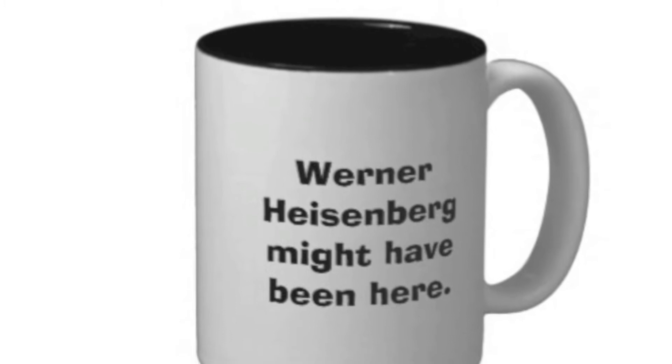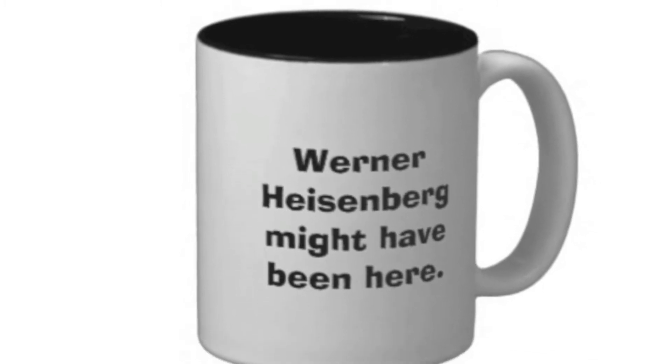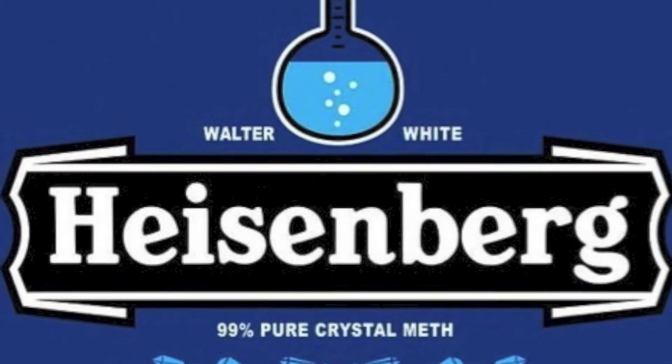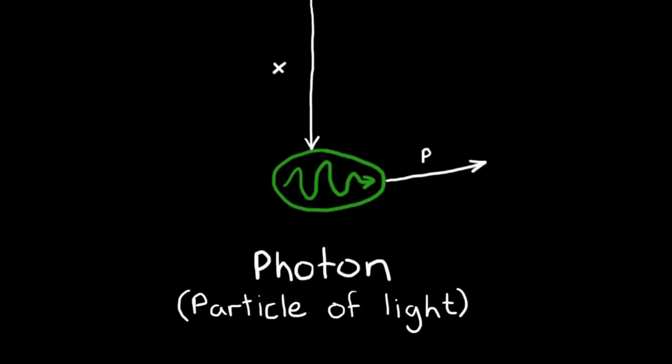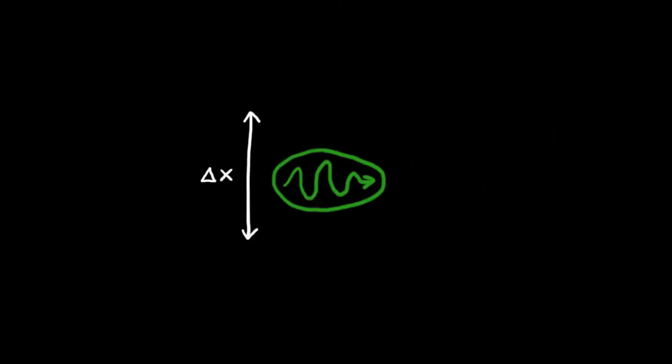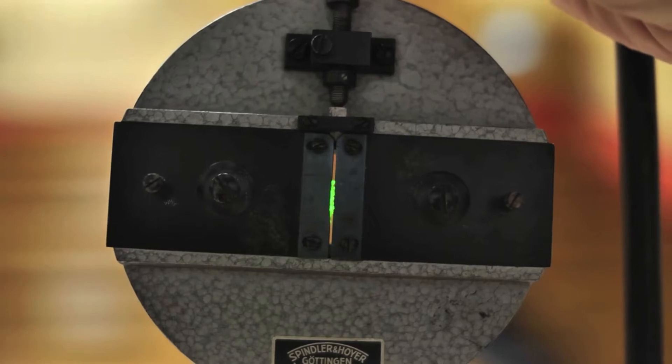There was a man called Heisenberg who postulated something absurd. He thought that we could not know precisely an object's position and velocity. The quantum nature of all we see means everything's a probability.